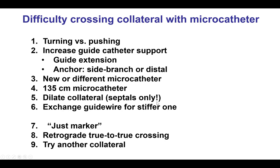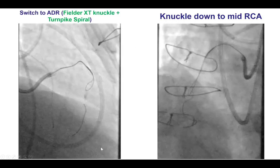If all these things fail, an alternative is to leave the retrograde guidewire as a marker and perform antegrade crossing, or try to cross with the already-crossed collateral guidewire. If it's a short occlusion, that wire may be able to cross retrograde into the proximal true lumen. Finally, if everything else fails, one may abandon this collateral and try a different one.